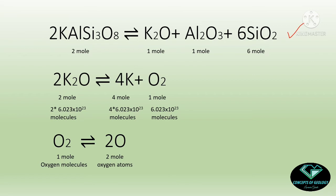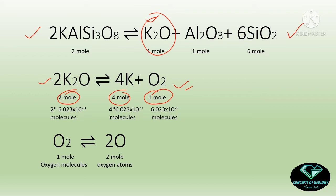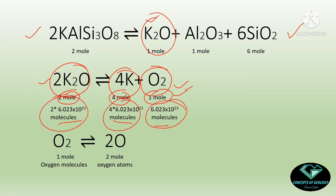Taking a deeper look: in this reaction, to form 2 moles of KAlSi3O8 we need 1 mole of K2O. The formation of K2O reaction shows that 2 moles of K2O break down into 4 moles of potassium and 1 mole of oxygen. If we convert to molecules we get corresponding numbers of molecules. I emphasize: we never say 2 molecules of K2O break down into 4 molecules of K — these coefficients represent moles, not molecules.